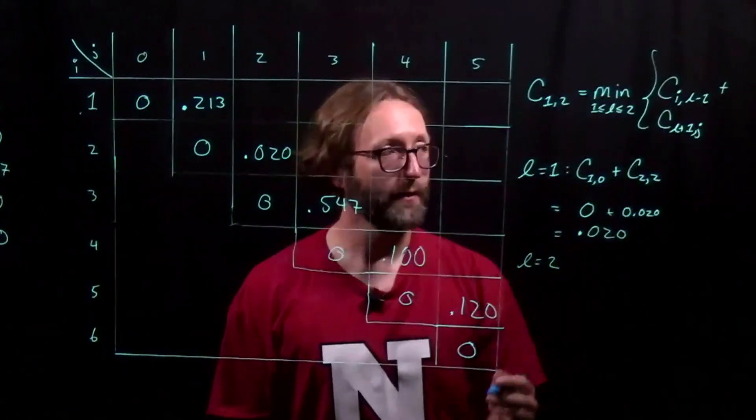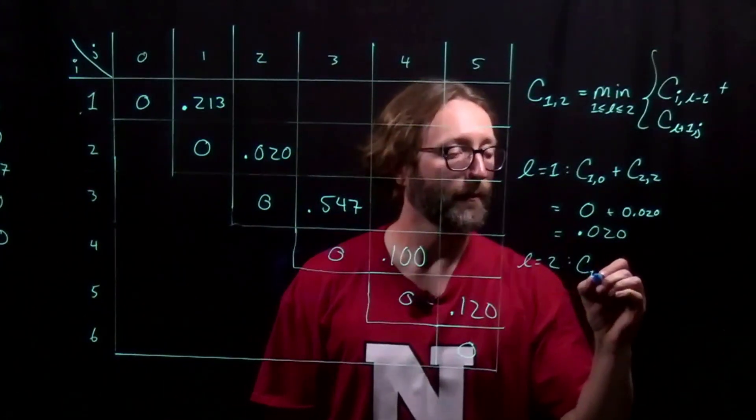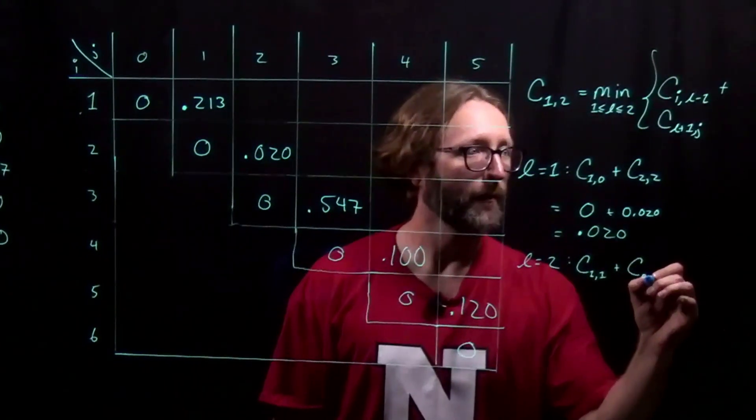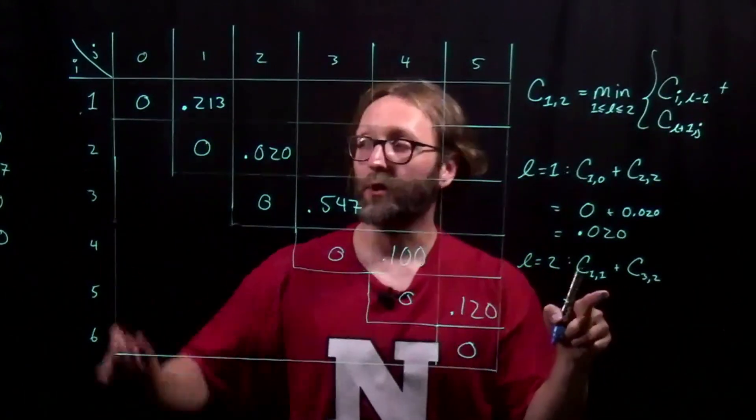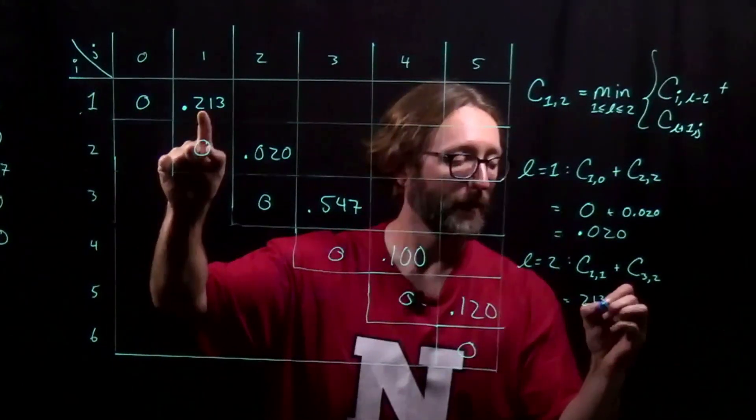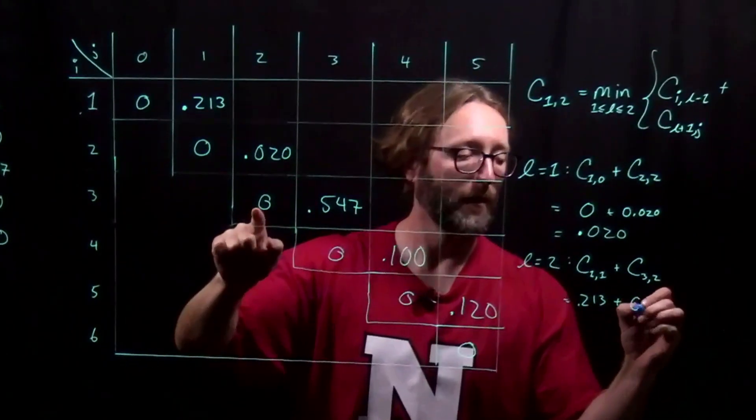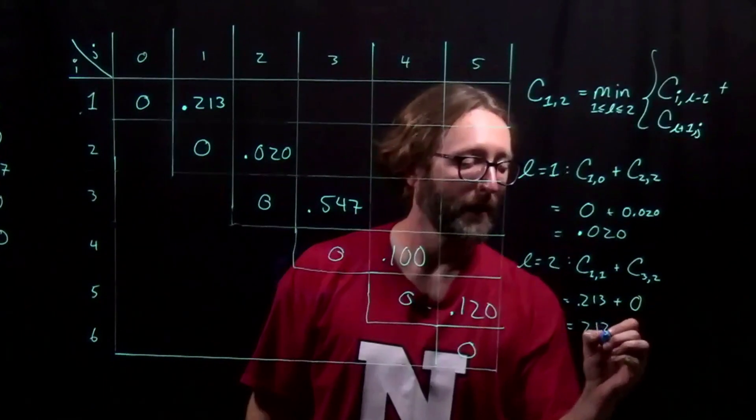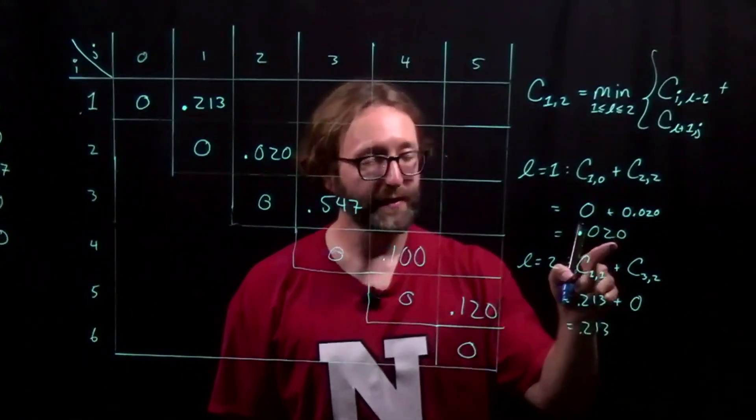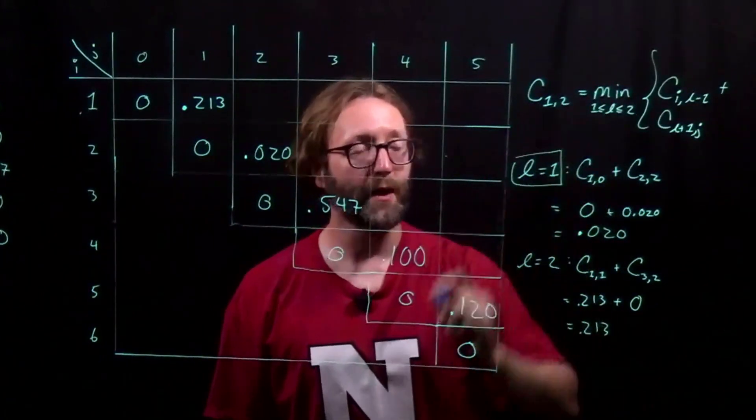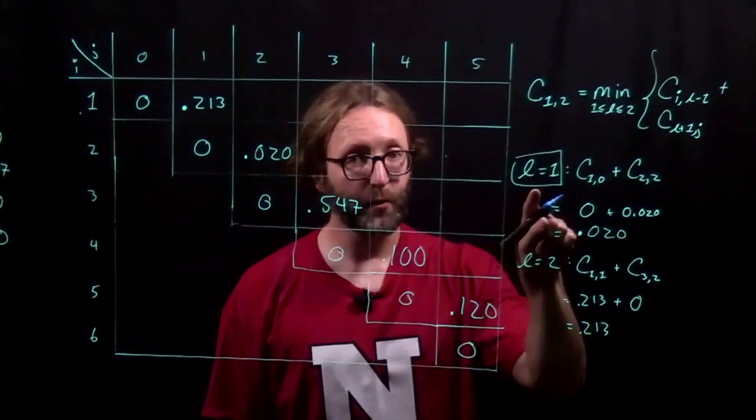The other possibility gives us the following. When we look these values up, we get a total of 2.13. Clearly, this is better because we are trying to take the minimum. We are trying to minimize the average number of key comparisons.